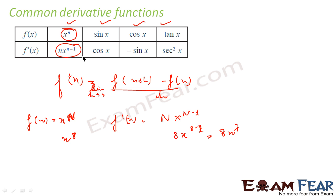Now let's derive all these formulas, because I am telling you this is how it is, but how will you trust me? I should prove this for you — it doesn't make sense to just follow what someone is telling without asking for the proof. So why is it that if f(x) = xⁿ, then f'(x) = n·xⁿ⁻¹? Let's try to prove all these formulas.